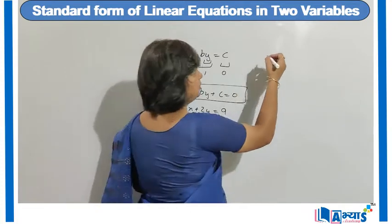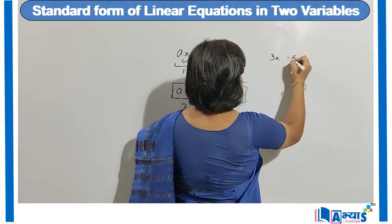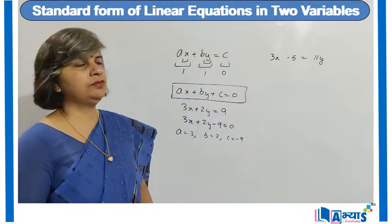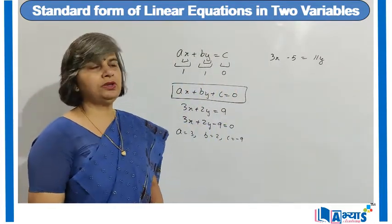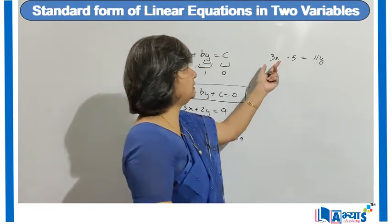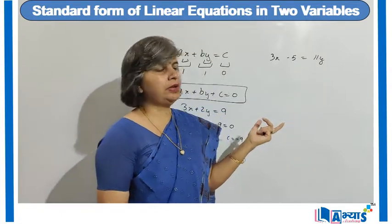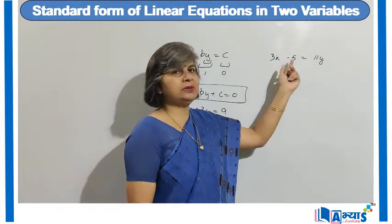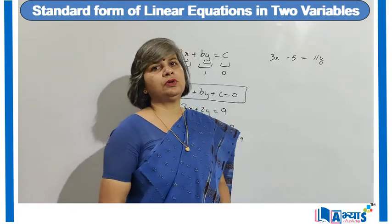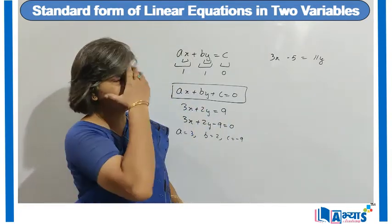Let us take another example. Suppose we are given 3x minus 5 is equal to 11y. This is again a linear equation in 2 variables — the degree of this term is 1, this is 0, and this is 1, so the highest degree is 1. It has 2 unknowns x and y, and it has an equal to sign. So it is a linear equation in 2 variables.